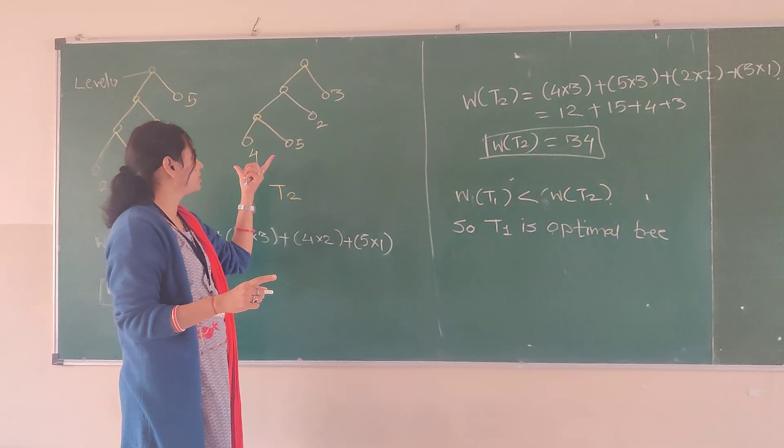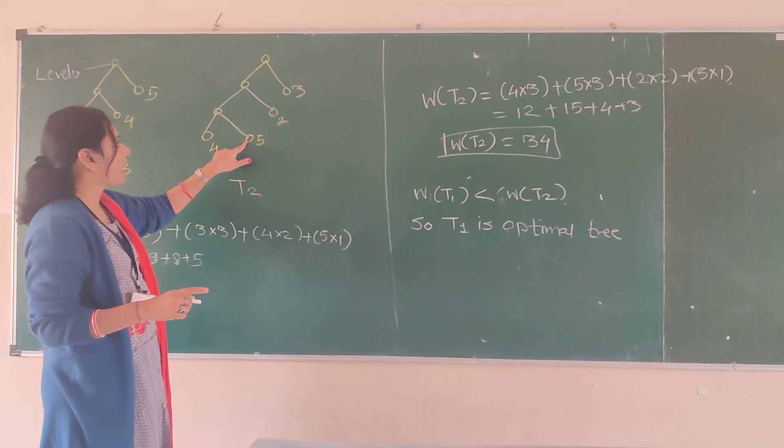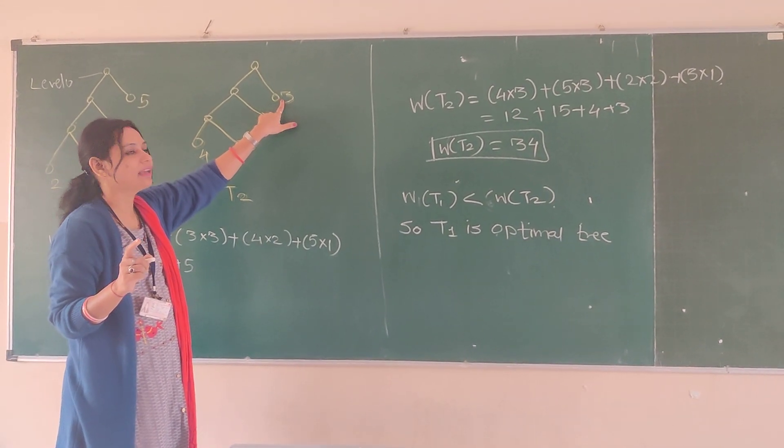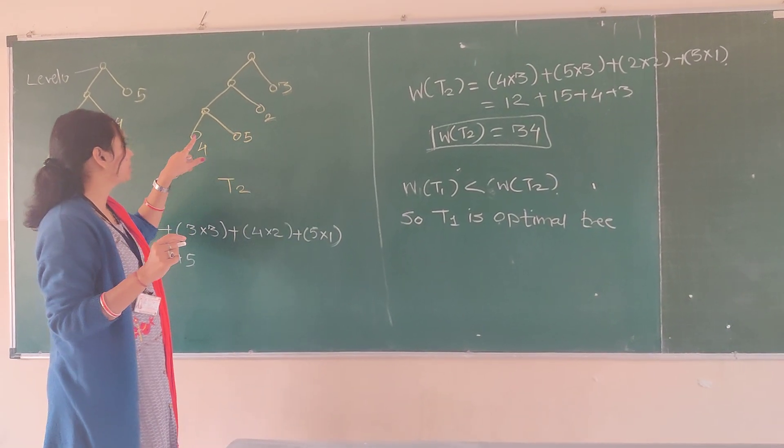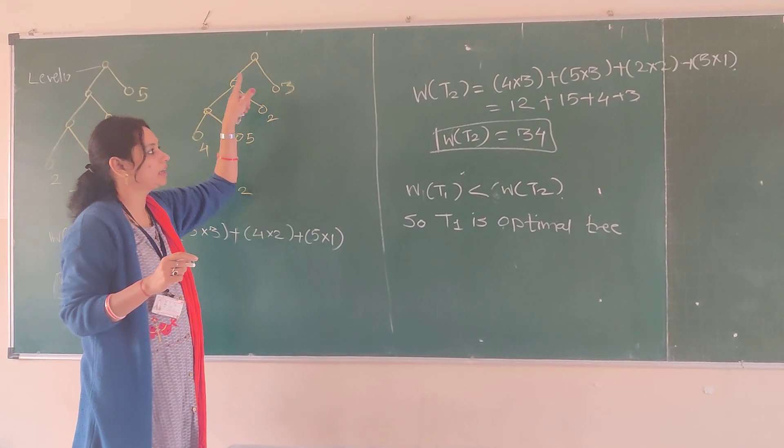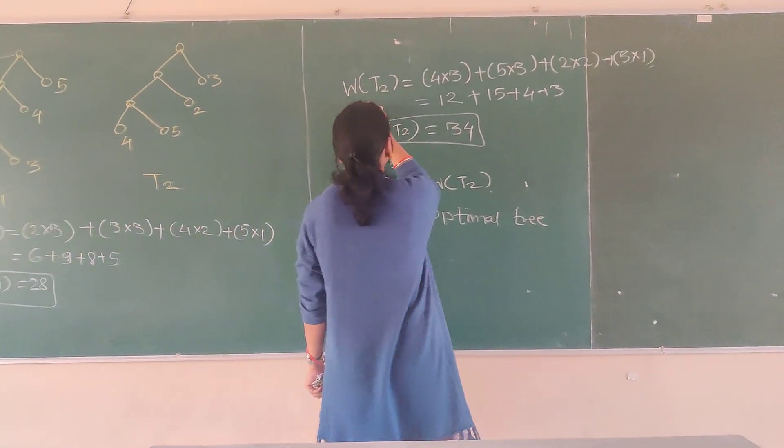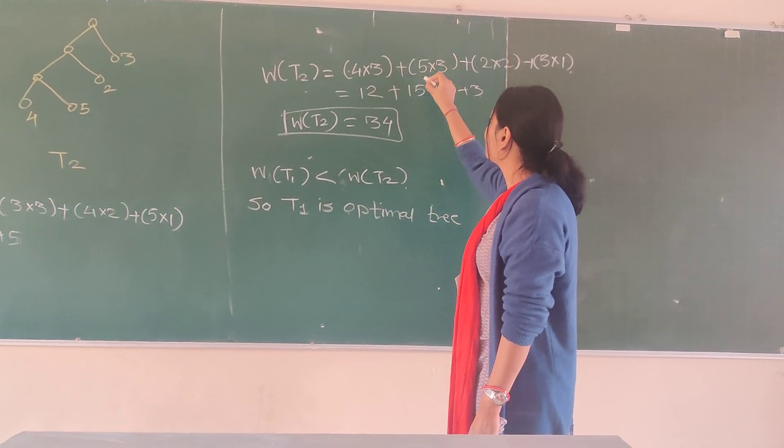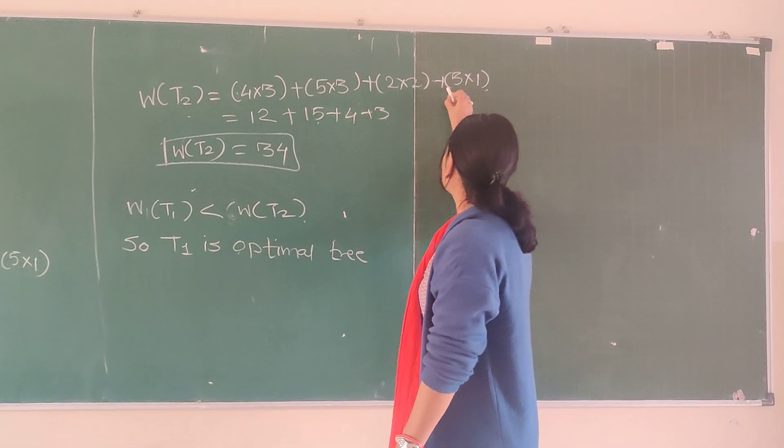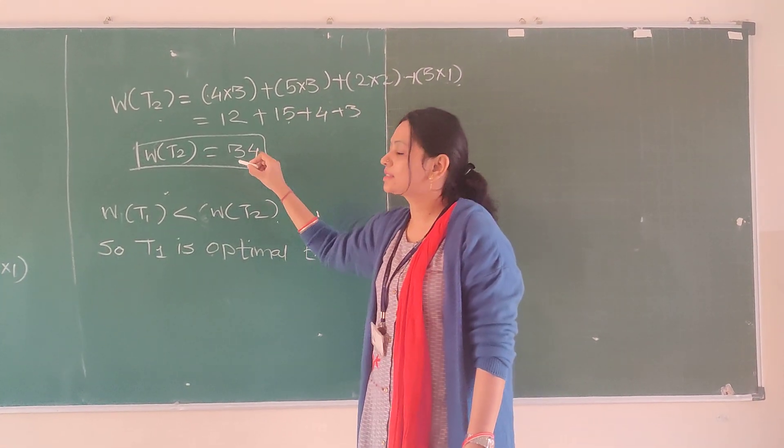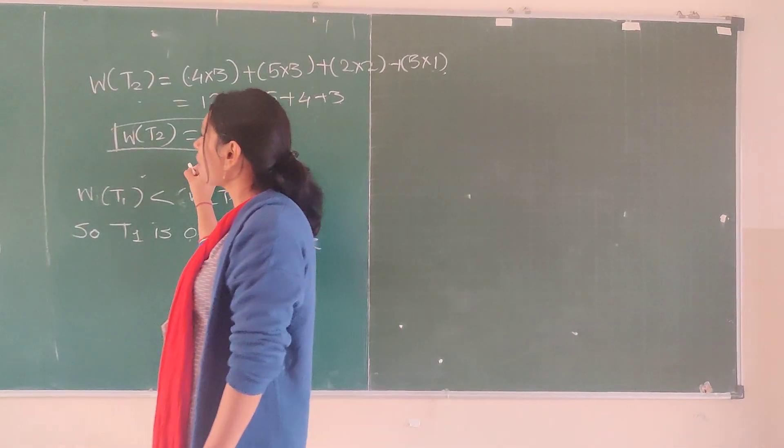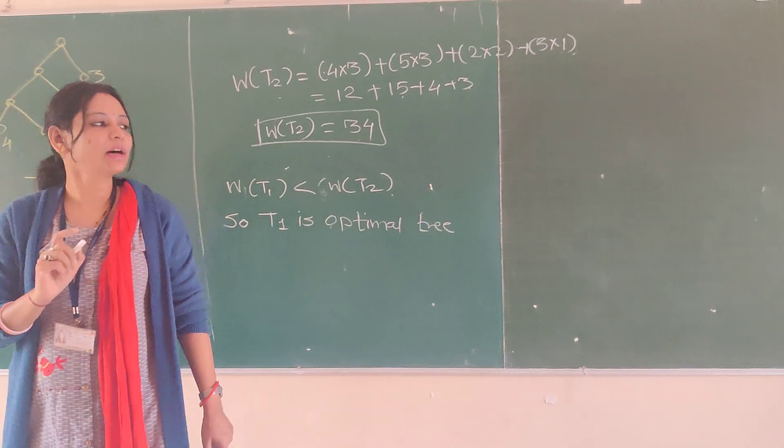Now we will find out the weight for T2. We were at level 3, 2 is at level 2 and 3 is at level 1. So it will be 4 into 3 plus 5 into 3 plus 2 into 2 plus 3 into 1. So the weight of T2, 4 into 3 is 12 plus 5 into 3 plus 2 into 4. That means the weight of the second tree T2 is 34.